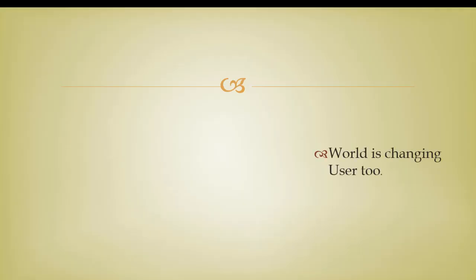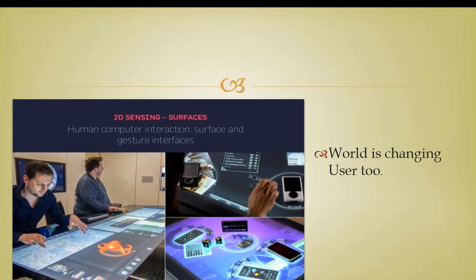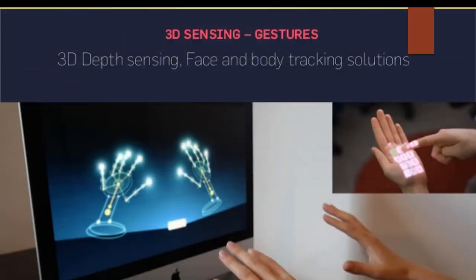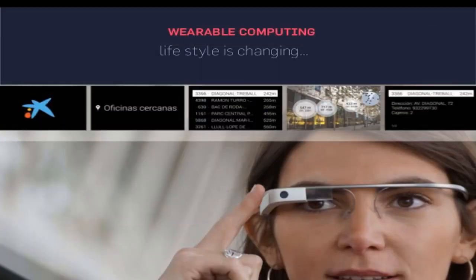The world is changing and user design is also changing. There is 2D sensing where moving physically with our hands can control the system. And in the future, 3D sensing will be used, which will be able to detect movement across the living room. Home is also changing with the passage of time, and lifestyle is also changing. Through wearables, we can interact with the system — Google Glass is an example of that.